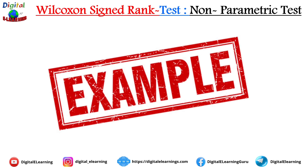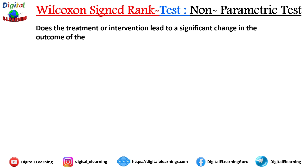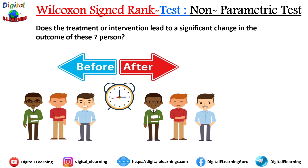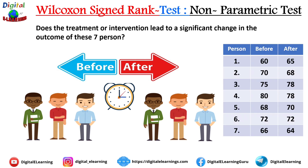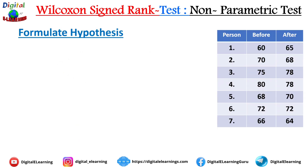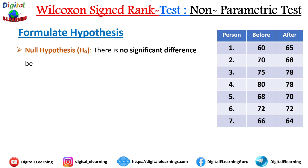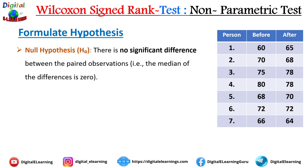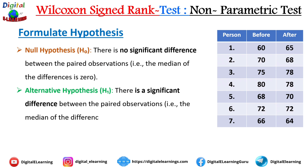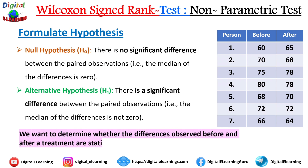Let's take an example. Does a treatment or intervention lead to a significant change in the outcome of these seven people? We have data for all seven people before and after, and we will use Wilcoxon's signed rank test to evaluate whether there is any significant change. The null hypothesis states there is no significant difference between the paired observations — the median of the differences is zero. The alternate hypothesis states there is a significant difference — the median is not zero. We want to determine this at a 5% significance level.